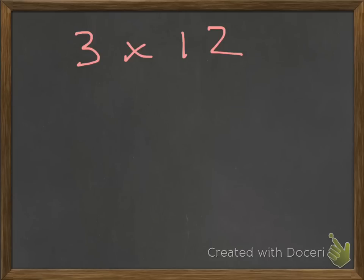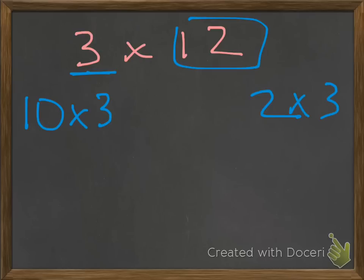And we could do the standard algorithm, but let's try something different. What if we split up this number here and made it into 10, and put a 2 over here? We still have this 3, so we need to multiply 10 times 3 and 2 times 3.